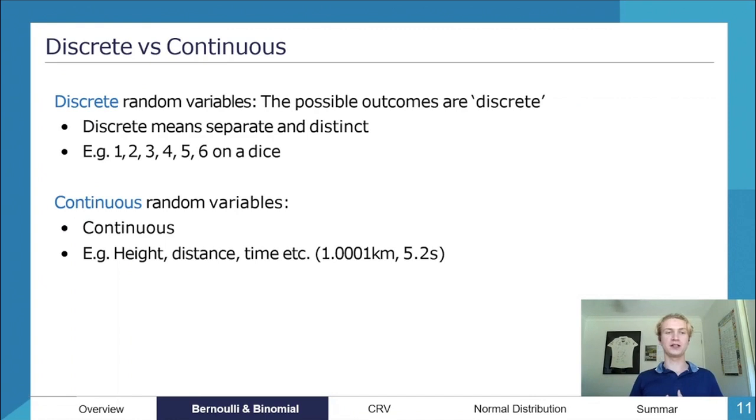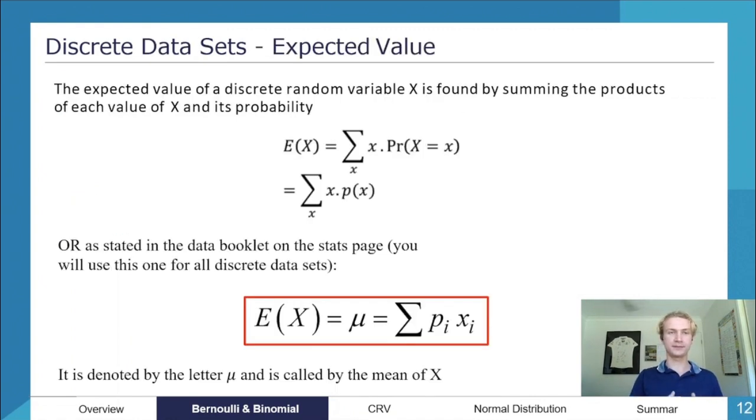Whereas discrete we use more binomial probability and stuff like that. So I'm going to go through some basic definitions, some basic values that you'll be using, some basic formulas that you'll be using for discrete data sets and then I'll continue on continuous data sets.